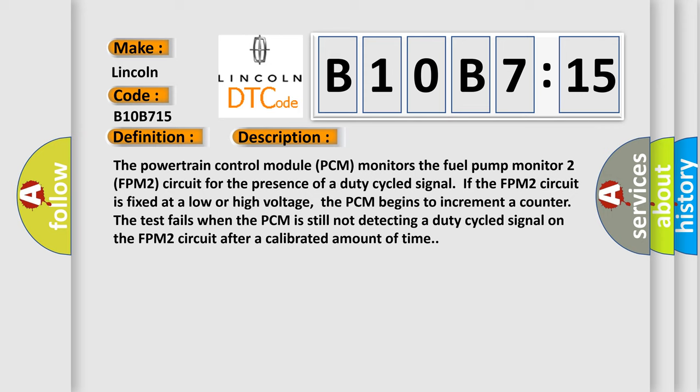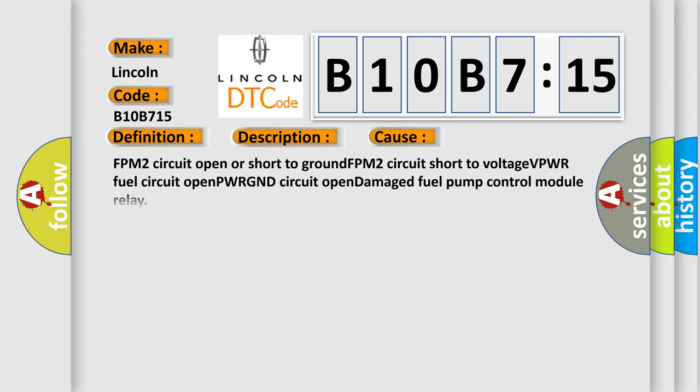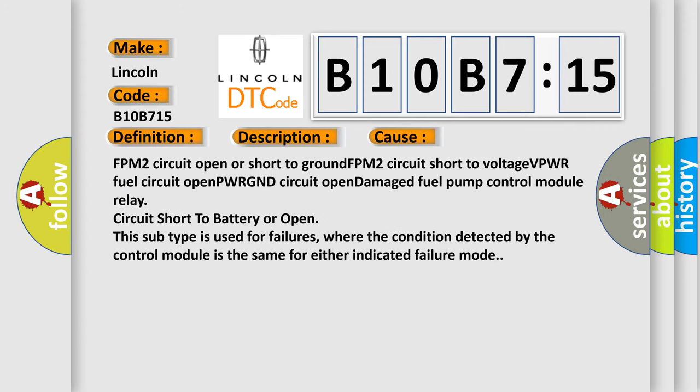This diagnostic error occurs most often in these cases: FPM2 circuit open or short to ground, FPM2 circuit short to voltage, VPWR fuel circuit open, PWRGND circuit open, damaged fuel pump control module, relay circuit short to battery or open. This subtype is used for failures where the condition detected by the control module is the same for either indicated failure mode.